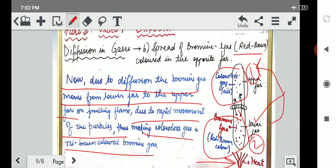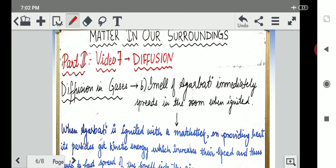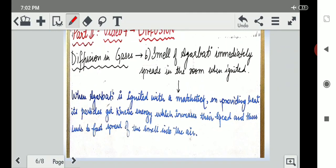Thus the colorless gas which was present in the upper jar has also now turned red brown in color. This shows that diffusion is occurring in nature. It is very simple. Not to get confused with yourself. It has a simple terminology.